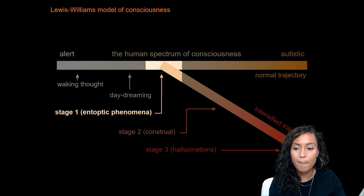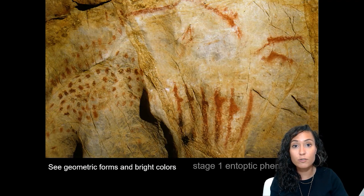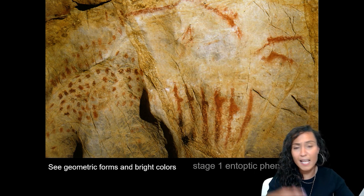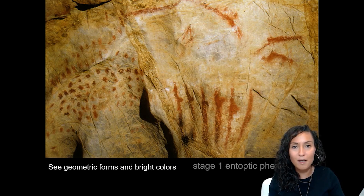In stage one — entoptic phenomena — individuals begin seeing geometric forms and bright colors. This is produced through light and oxygen deprivation. Many of you may have experienced this if you stand up quickly after sitting down and see bright lights and little stars; that's the beginning of entoptic phenomena.